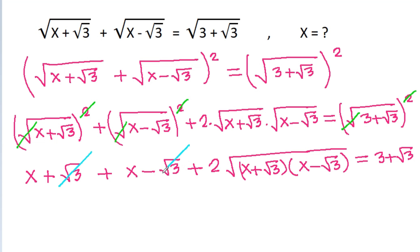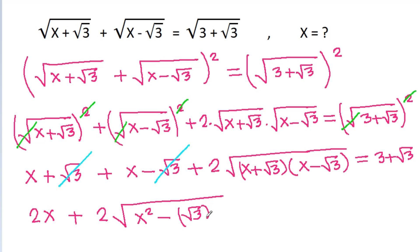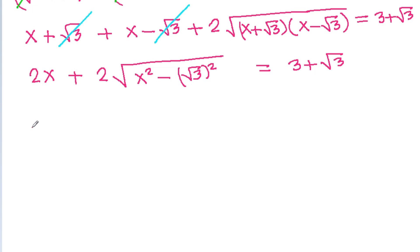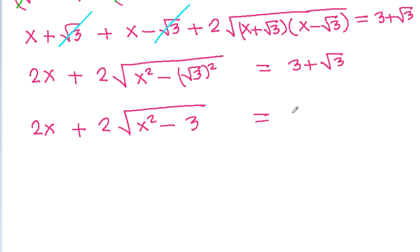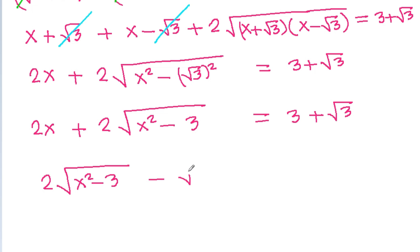And square root of 3 will get cancelled. So x plus x will be 2x, plus 2 times square root of (x plus root 3)(x minus root 3), which equals x squared minus root 3 squared, equal to 3 minus square root of 3. And it is 2x minus 2 times square root of (x squared minus 3) is equal to 3 minus square root of 3, and 2 times square root of (x squared minus 3) minus square root of 3 will be equal to 3 minus 2x.